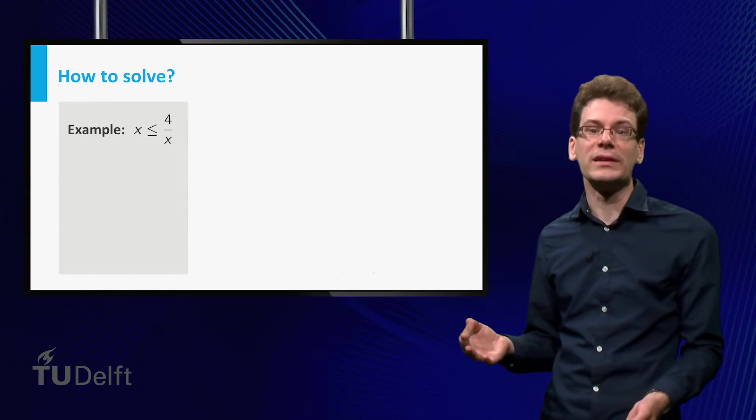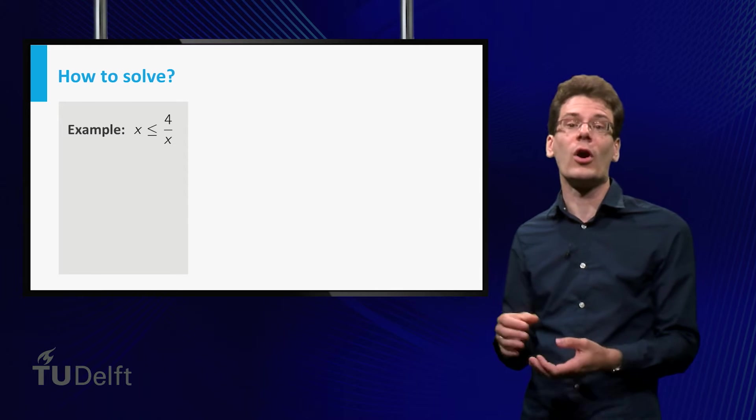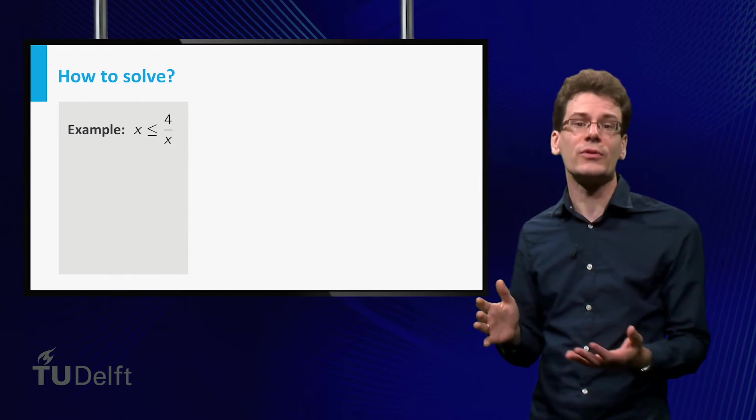Take the following inequality: x smaller than or equal to 4 over x. For what values of x is it satisfied?